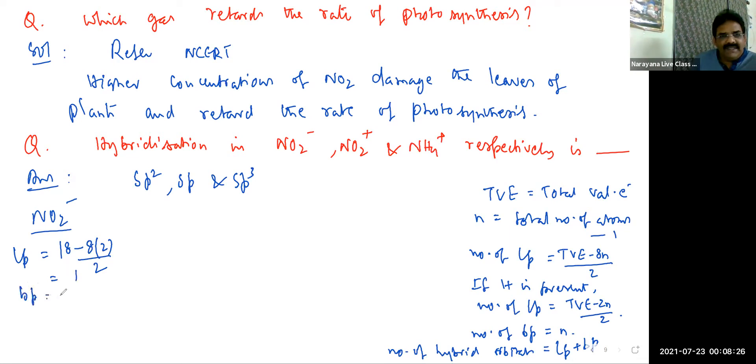That means I get lone pairs 1 and bond pairs equal to N, that is equal to 2. So hybrids equals lone pairs plus bond pairs, 3. That means hybridization is SP2. Over.